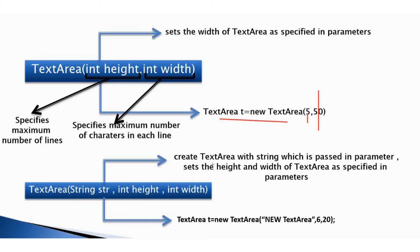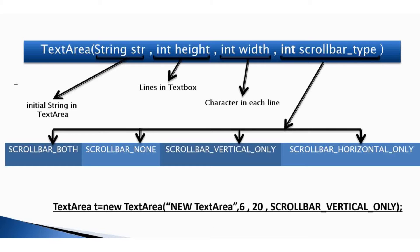The fourth constructor takes three parameters: it creates a TextArea with a string passed in the parameter, and sets the height and width of the TextArea as specified in the parameters.